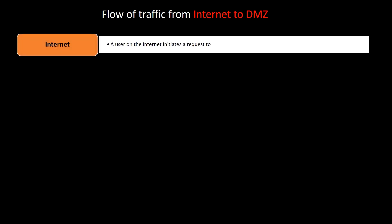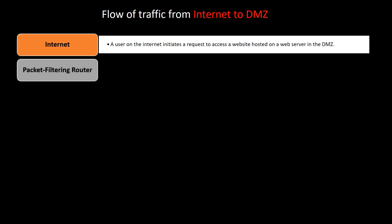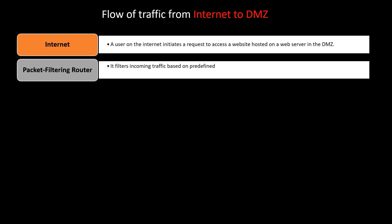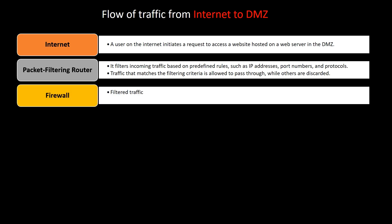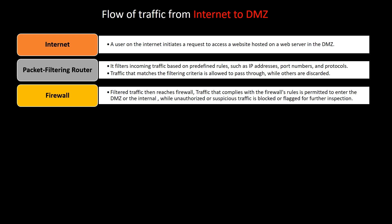Let's understand the flow of traffic from the internet to the DMZ. A user on the internet initiates a request to access a website hosted on a web server in the DMZ. A packet filtering router filters incoming traffic based on predefined rules such as IP addresses, port numbers, and protocols. Traffic matching the filtering criteria is allowed to pass through, while others are discarded. The filtered traffic then reaches the firewall, and traffic that complies with the firewall's rules is permitted to enter the DMZ, while unauthorized or suspicious traffic is blocked or flagged for further inspection.